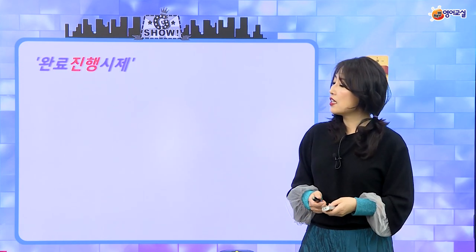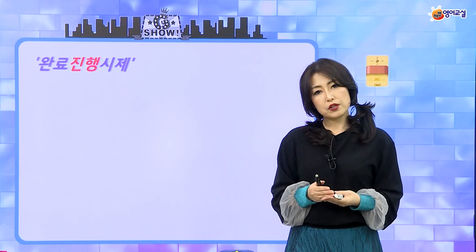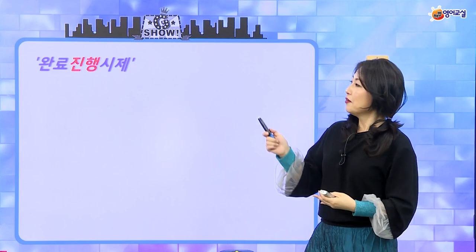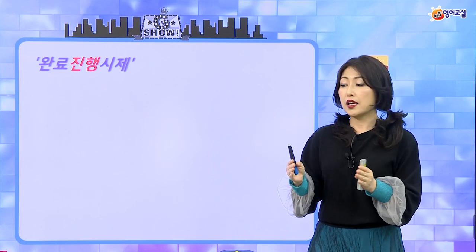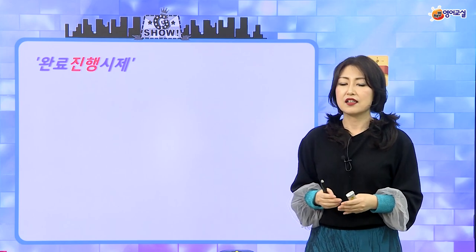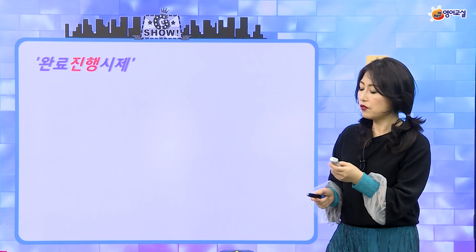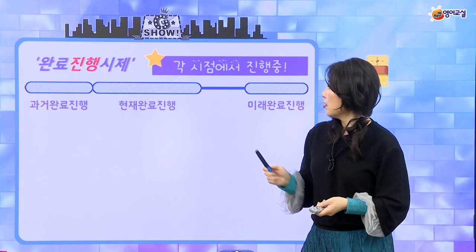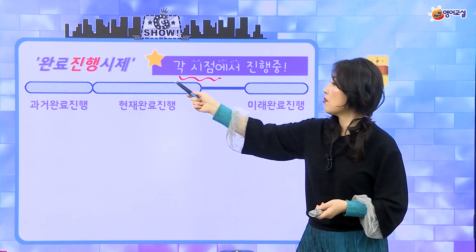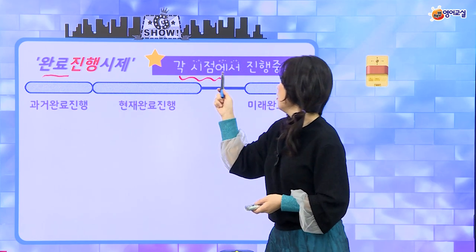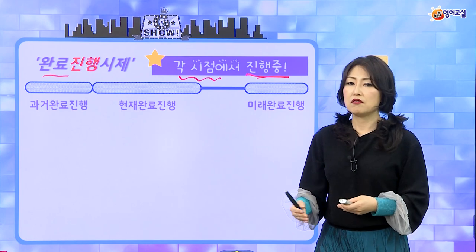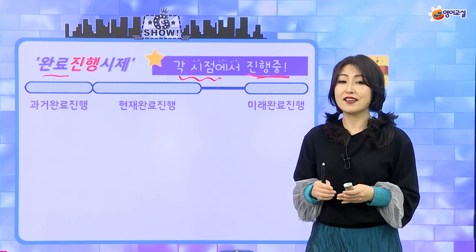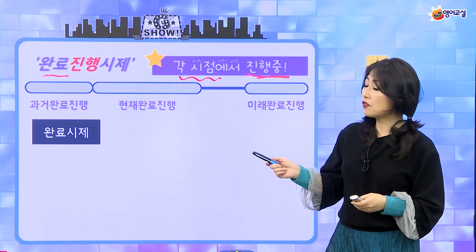완료 진행 시제인데, 지금 과거 완료와 미래 완료를 알아봤어요. 이 완료 진행 시제는 말 그대로예요. 완료 시제가 계속 일이 이어지는 것에 진행 시제 — 뭔가 일이 계속되는 걸 말하는 것 — 을 더한 거예요. 과거 완료 진행, 현재 완료 진행, 미래 완료 진행 이렇게 세 개 있어요. 각 시점에서 그 일이 계속 이어지고 있는 것을 나타내는 거예요. 특정한 경우를 제외하고는 많이 쓰이지 않지만 개념을 알아둘 필요가 있어요.